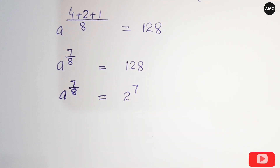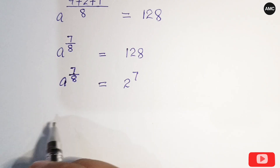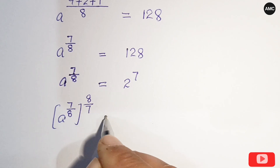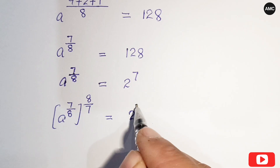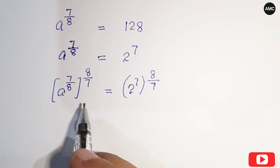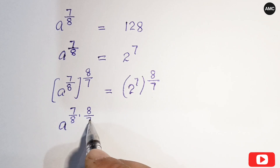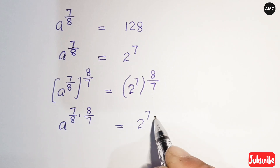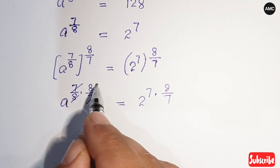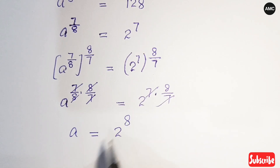Since 128 equals 2 to the power 7, we have a^(7/8) = 2^7. Raising both sides to the power 8/7: a^(7/8 × 8/7) equals (2^7)^(8/7). The 7/8 and 8/7 cancel on the left giving a, and on the right the 7s cancel giving 2 to the power 8.